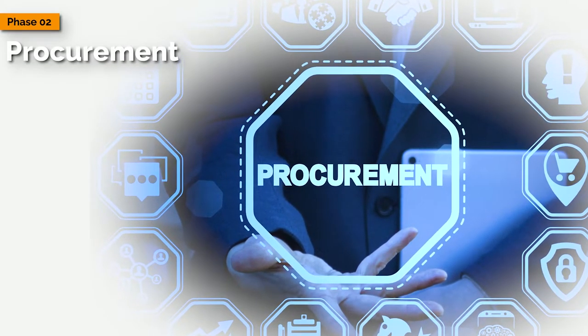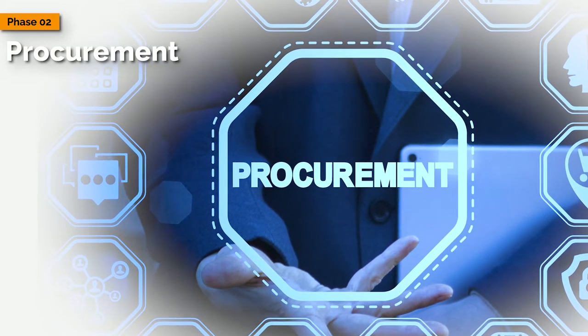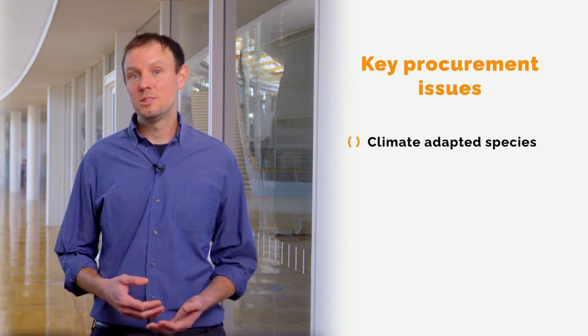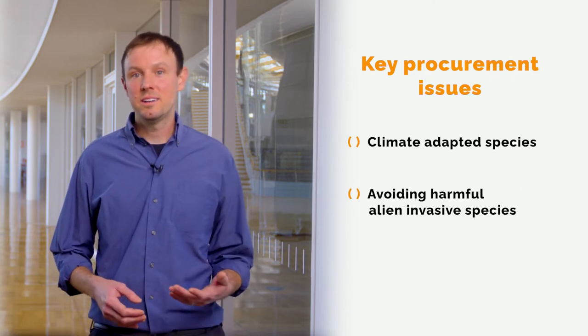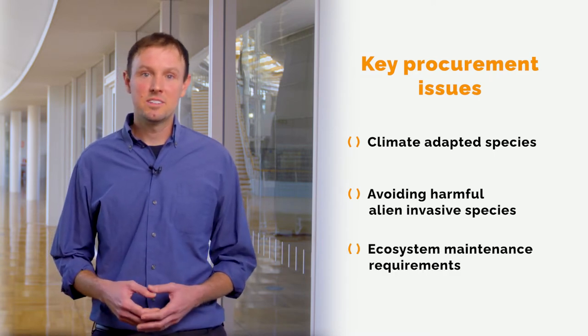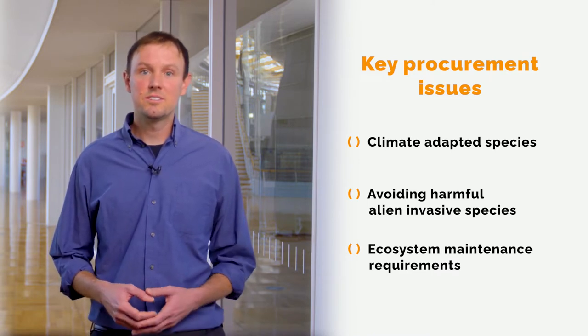Next, we move on to the procurement phase of project implementation, which for MBS requires special attention. Understanding the potential impacts of introducing or changing the management of nature at a particular site is not as simple as understanding the impacts of a conventional gray infrastructure project. Any human intervention in an ecosystem has the potential to harm the ecological balance. Key procurement issues to be very careful with are choosing climate-adapted species, avoiding introducing harmful alien invasive species, and understanding ecosystem maintenance requirements — for example, whether regular management is needed to ensure the ecosystem survives and continues functioning as intended.